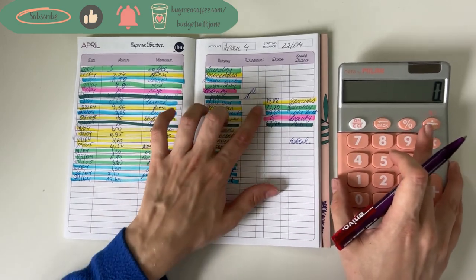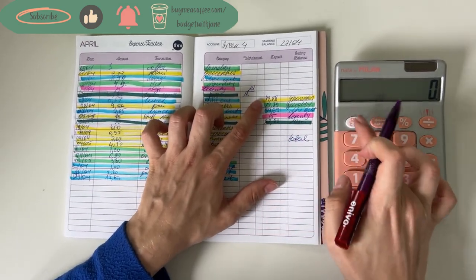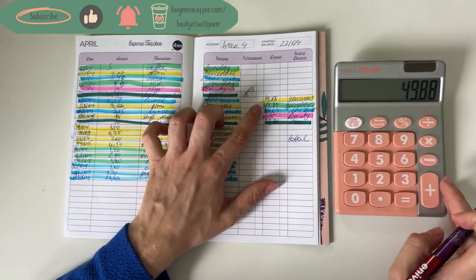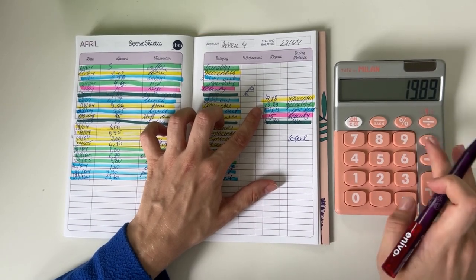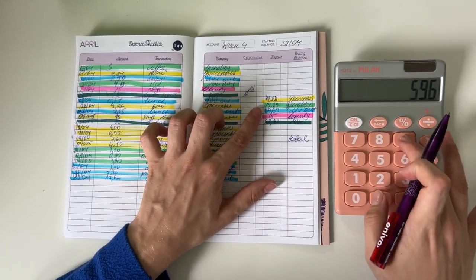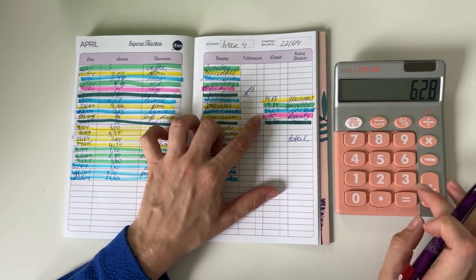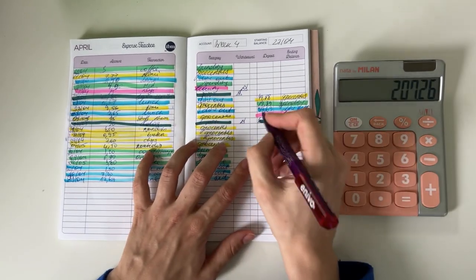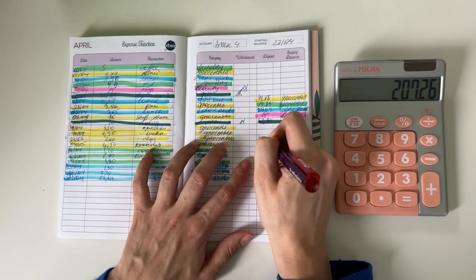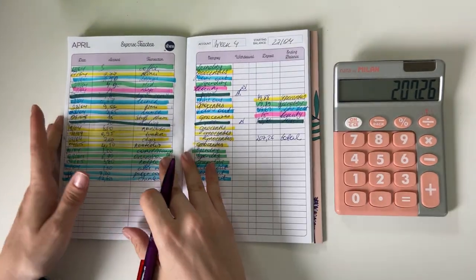Let's start with the expenses. We spent 49.88 in groceries, 19.89 in spending, 59.69 in dine out, 15 in beauty, and 62.80 in miscellaneous. In total that was 207 euros and 26 cents, perfect.